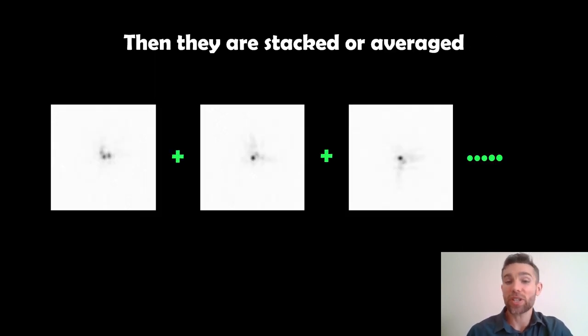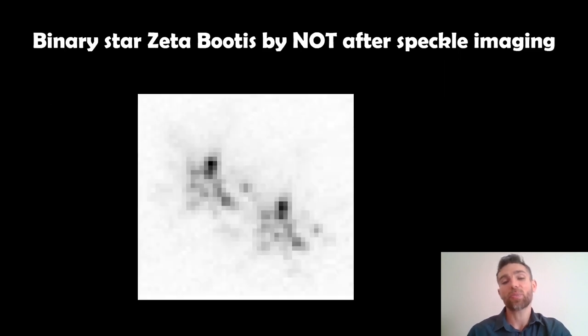We would then add them all and average it or stack them. So we typically refer to it as stacking, but we'd basically average them all, and then you would get your final image. And if you do all of that, this particular binary star, so binary star Zeta-Bootis again by the Nordic Optical Telescope, which is what that animation was. After you've done all of that and with speckle imaging, this is what you get. And you can quite clearly see now that you've got two binary stars there. I mean it's not absolutely perfect, but it's a lot better than it was originally. So this technique can be used to resolve quite small angular objects if the binary stars are quite close to each other, and you can overcome some atmospheric turbulence to get this sort of image here.